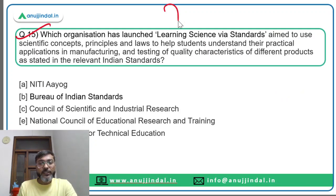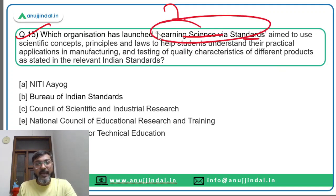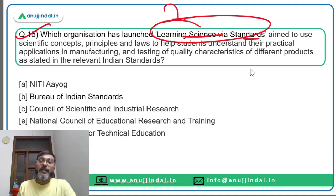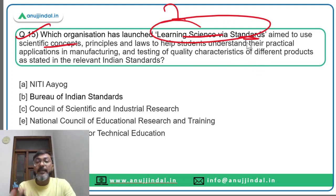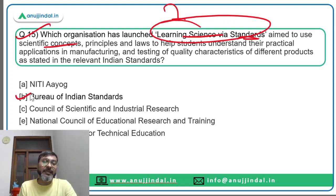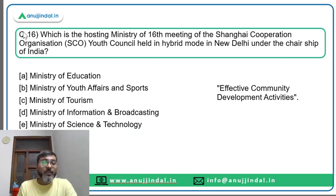Question fifteen: which organization has launched 'Learning Science via Standards'? This initiative is aimed at using scientific concepts, principles and laws to help students understand their practical applications in manufacturing and testing of quality characteristics of different products. Since it involves standards, the answer is BIS (Bureau of Indian Standards). Option B is the correct answer.